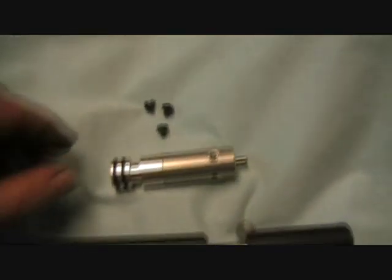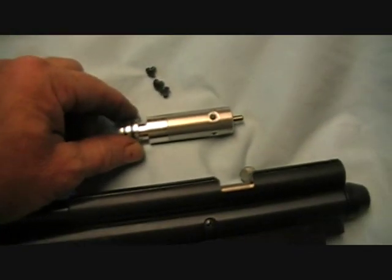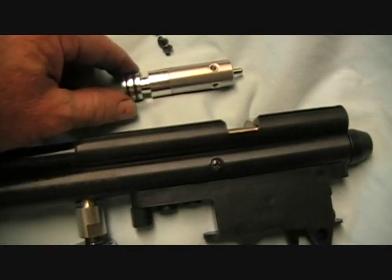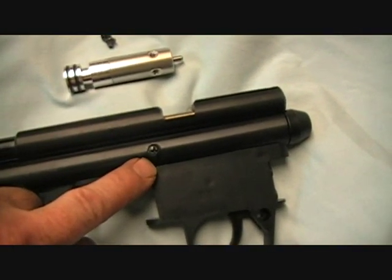And here's the valve. These three little screws are what hold the valve into the air tube. Now you can see one of the screw heads right here.